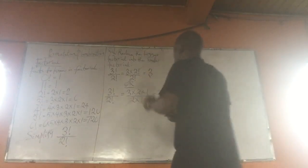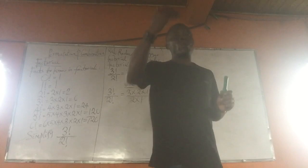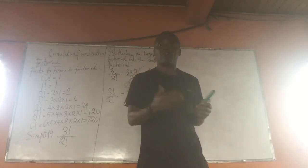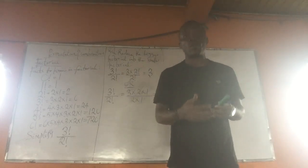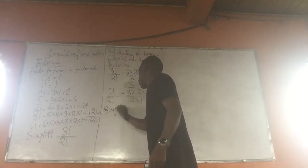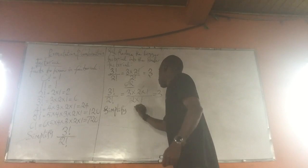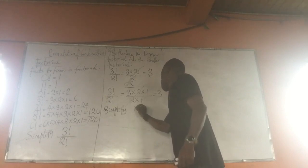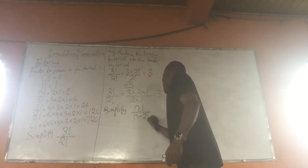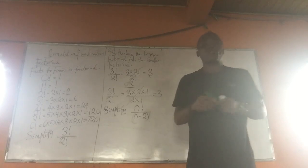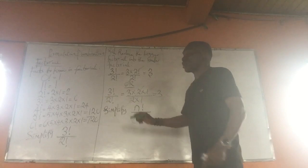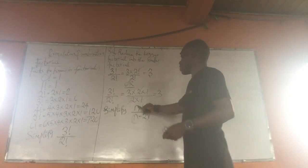Now I will treat one more example; the next part of the topic will follow after. Let's take: simplify n Factorial over (n minus 2) Factorial. Here, n Factorial is bigger than (n minus 2) Factorial. What do I do? I reduce the bigger Factorial into the smaller Factorial by repeating the first n.